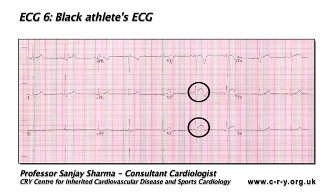However, one should consider his ethnicity. The presence of convex ST segment elevation in leads V1, V2, V3 and associated T-wave inversions in these leads are common in Black athletes and are present in 25% of individuals in this ethnic group.